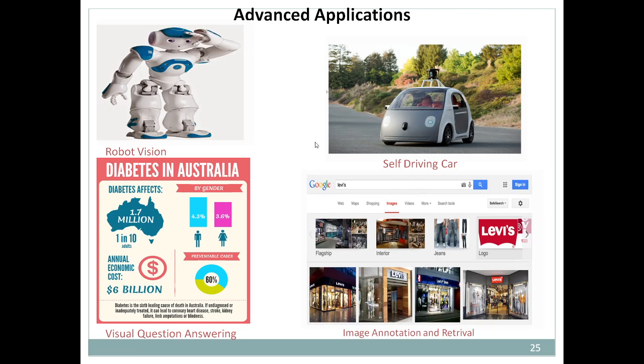Image annotation and retrieval is another latest application of OCR. To summarize, we have understood what OCR is — optical character recognition — which is simply extracting text from an image and making use of it in machine-readable form. We covered how OCR works, which open-source library can be used, and both traditional and advanced applications of OCR.